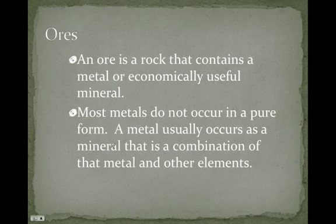Ores: an ore is a rock that contains a metal or economically useful mineral. Minerals form inside of rocks — when we talk about veins, like gold veins, it's because we have a rock already there and a mineral formed in a crack of that rock. Most metals do not occur in a pure form; the metal usually occurs as a mineral that is a combination of that metal and other elements. Iron is hardly ever found in nature as just iron — it's found combined with other substances.